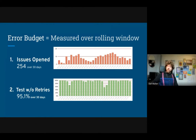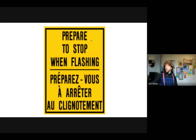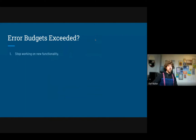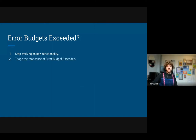So what do you do when the error budget has been exceeded? When you're getting close to or have exceeded your error budget, you stop all other work and focus on that error budget. You stop working on new functionality, stop merging new features, stop accepting new feature contributions, and you triage to find the root cause of why the budget was exceeded.